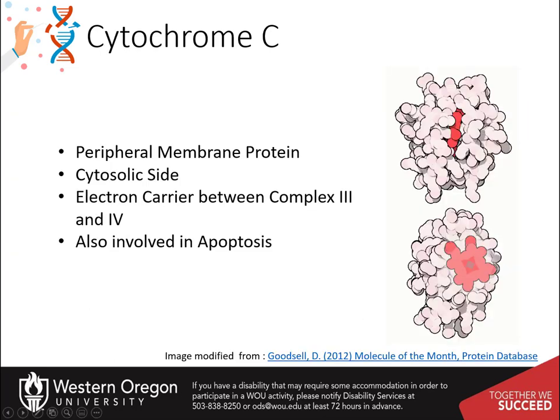Cytochrome C, shown here, is a small water-soluble protein that associates as a peripheral membrane protein with the inner mitochondrial membrane on the cytosolic side. Its main purpose is to carry or shuttle electrons between complex III and complex IV of the electron transport chain, but it is also involved in the process of apoptosis, which we will discuss later. To mediate its electron-carrying function, cytochrome C contains a heme group with an iron ion gripped tightly inside, colored red here.